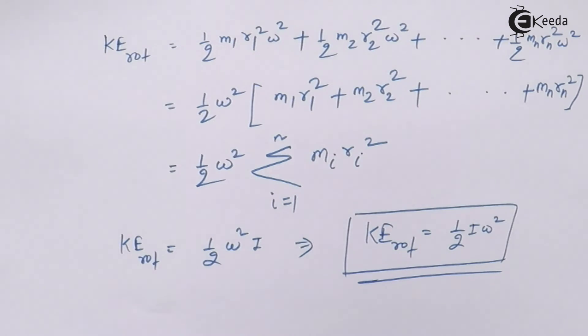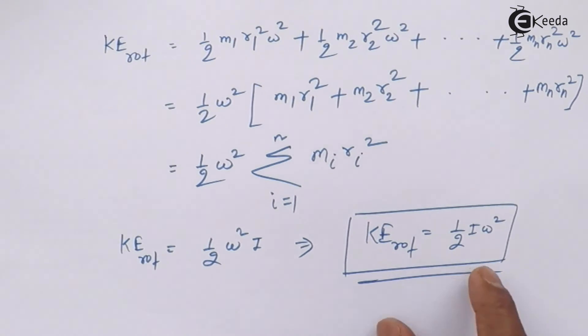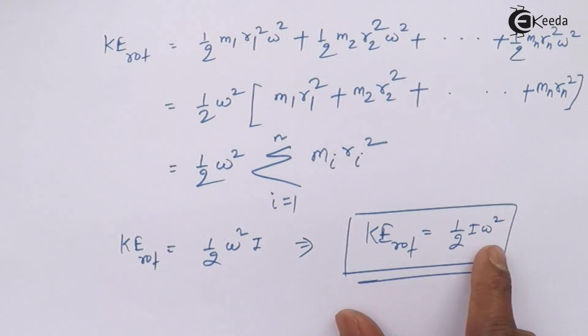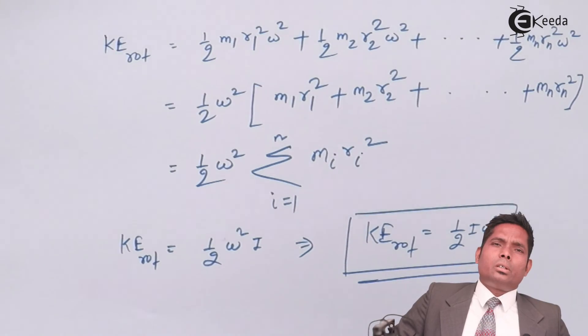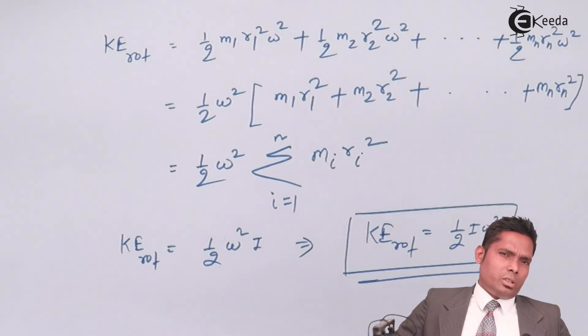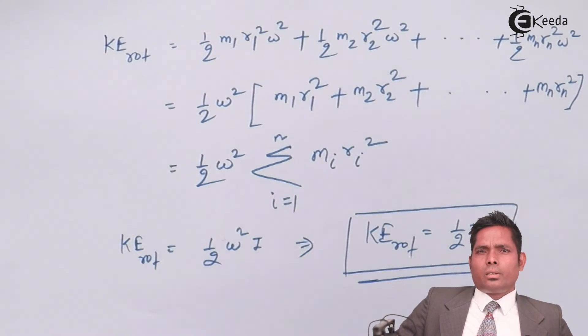This is the kinetic energy of rotation. When a body rotates, its kinetic energy is given by ½Iω², where I is the moment of inertia and ω is the angular velocity.